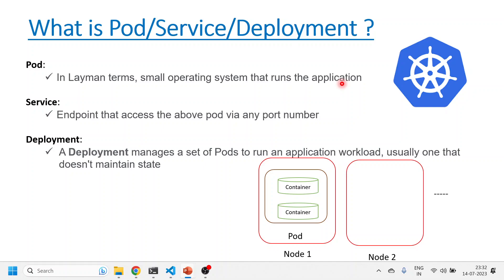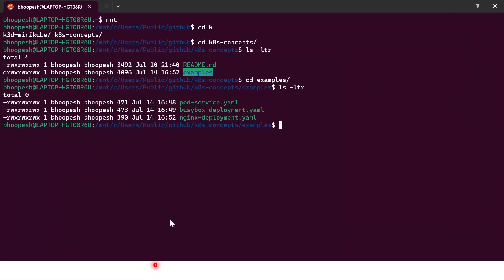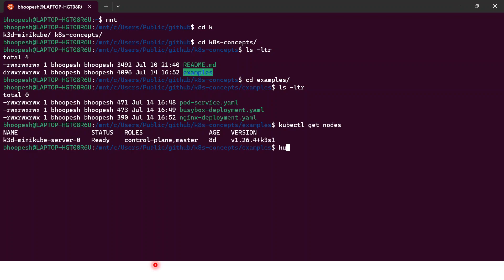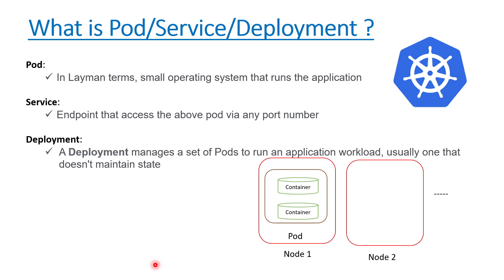There are certain components within the cluster: pod, service, and deployment. A pod is nothing but a small operating system or entity. Inside a pod we can have one container or multiple containers, and one node can have multiple pods. Consider minikube as a single-node cluster. If you run kubectl get pods, these are independent applications — independent operating systems — running within node one. A cluster may have multiple nodes: node one, node two, node three — actually an odd number: one, three, five.